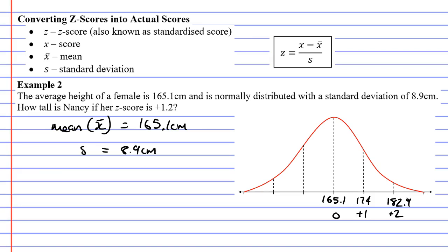And if I add that my z-score is positive 1.2, so there's no need for me to go into the negatives here. A z-score of positive 1.2 is slightly higher than plus 1, so it's going to be slightly higher than 174 cm.